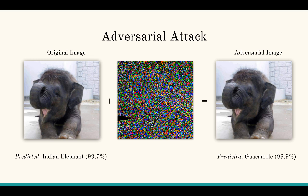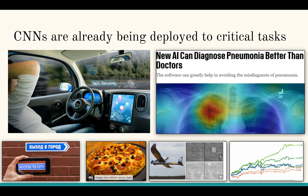We are all familiar with various ways deep learning models can be fooled. One such technique is to find an additive noise which changes the predicted class of the given image. Unfortunately, these models are now widely used and some even in critical tasks.